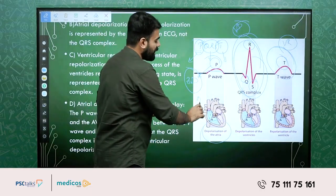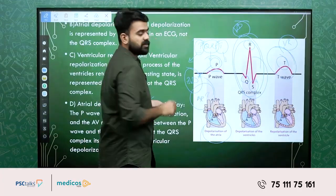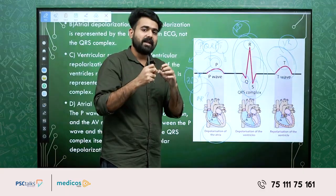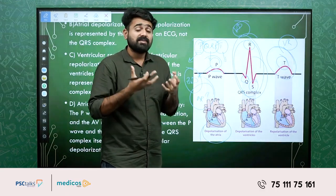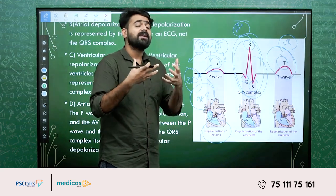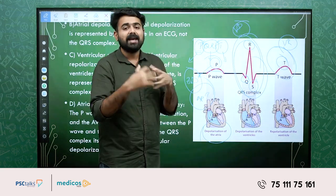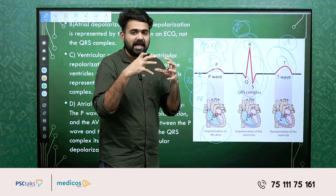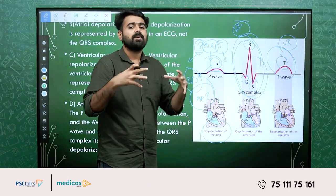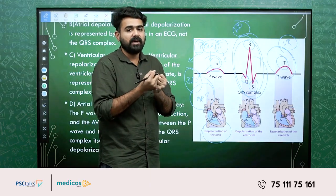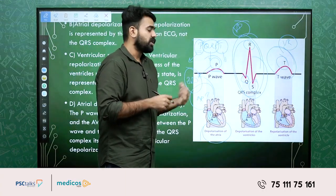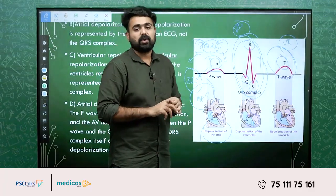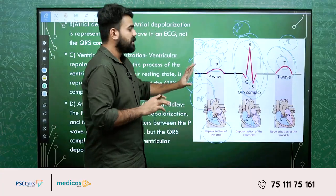Next, atrial repolarization — where does it appear? When atrial contracts and blood moves to the ventricles, the ventricles have to contract, so atrial repolarization coincides with ventricular depolarization. Because ventricular depolarization is much larger, atrial repolarization is hidden within the QRS complex and is not separately visible on the graphical ECG record. That is the simple representation of ECG waves.